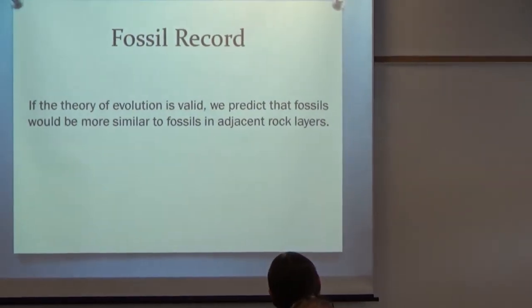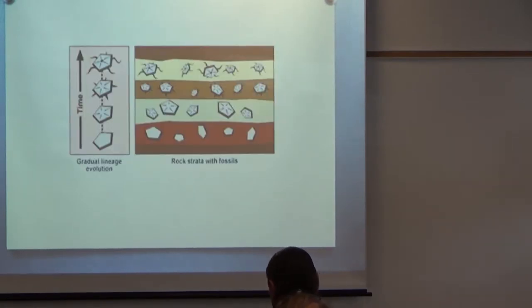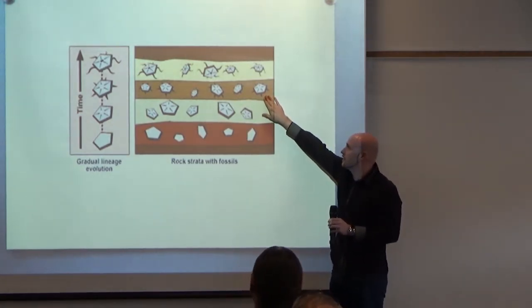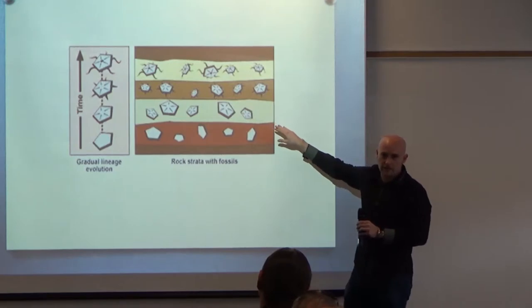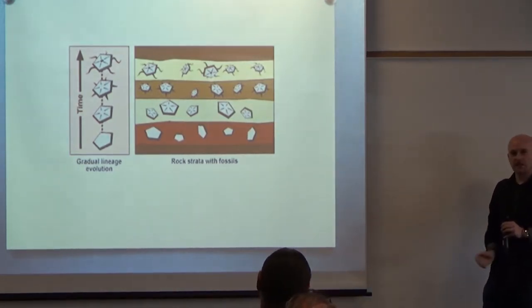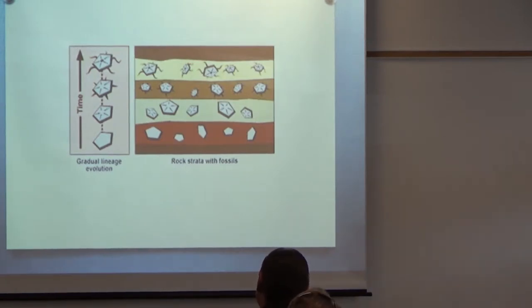Another thing we can look into with the fossil record is that fossils should be more similar to fossils in adjacent layers. There shouldn't be dramatic jumps if the fossil record is intact. And again, that's what we find. When we make these predictions and we look at the fossils in adjacent layers, let's look at these guys. These are most similar to here and here, right? Again, just like the previous example, it would be very easy for this not to be the case. But, when we look at fossils in intact layers, this is exactly what we find.